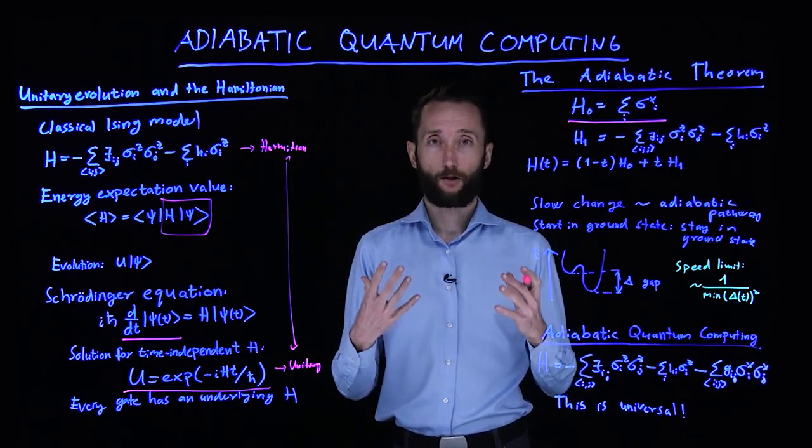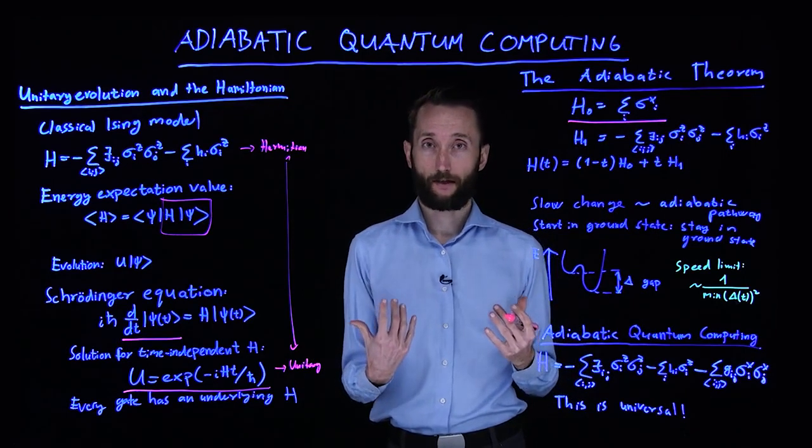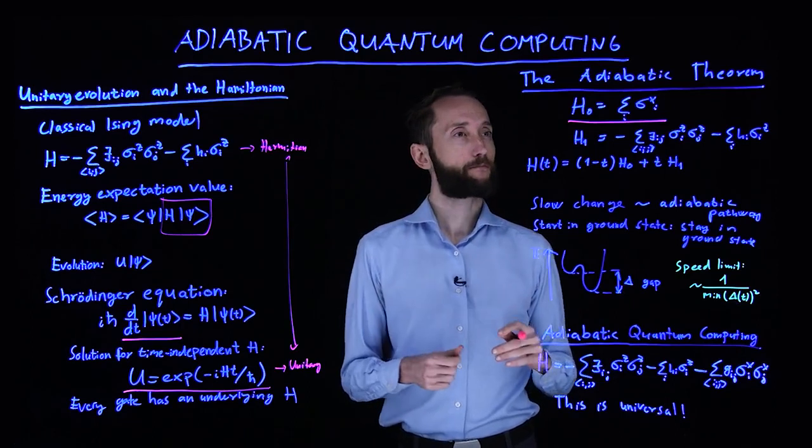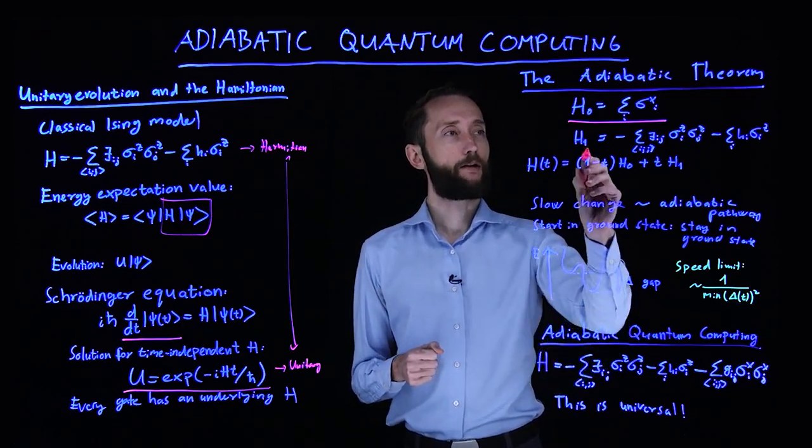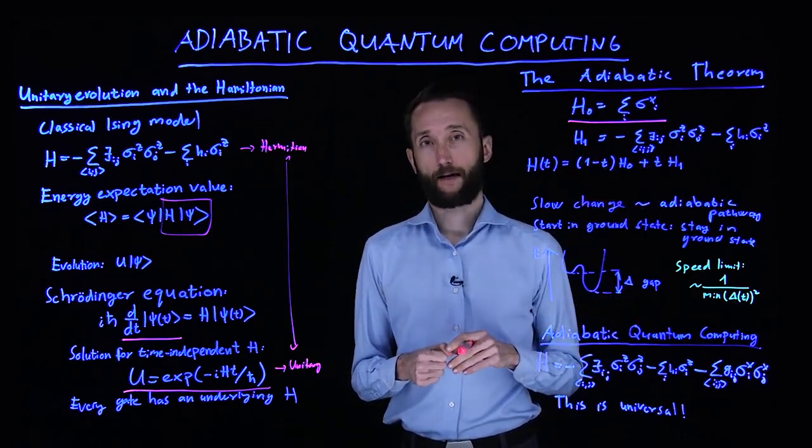We know that the ground state, the lowest energy state of this, is the equal superposition. Now we can take another Hamiltonian, for instance, our classical Ising model.